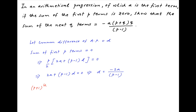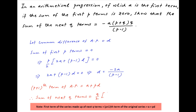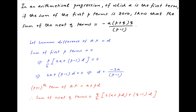The (p+1)th term of this arithmetic progression is equal to a plus p times d. The sum of the series made up of the next q terms of the given arithmetic progression is equal to q upon 2 times (2 times the first term of this series, which is the (p+1)th term of the original series, that is a plus pd, plus q minus 1 times d).